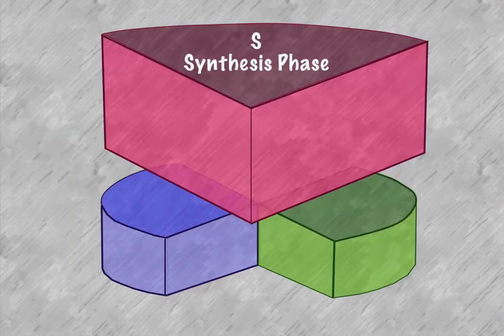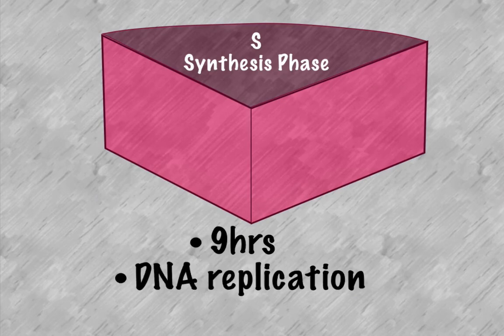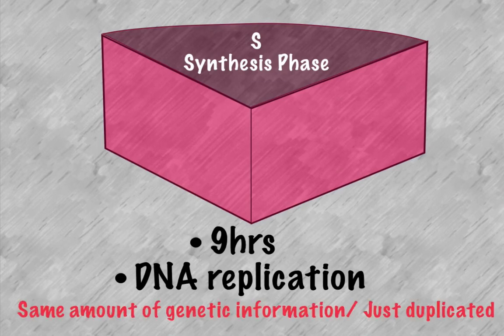Next we have the S phase or the synthesis phase. This phase takes about nine hours, and this is where DNA replication takes place. Make sure and watch the video for DNA replication. We have the same genetic information, just duplicated. It's like getting another copy of a book—each book has the same information. In this case, we only make another copy, a second copy.